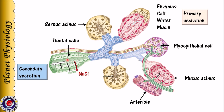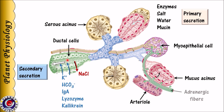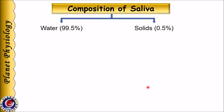As the primary secretion flows through the ducts, ductal cells — shown in green — reabsorb sodium and chloride and secrete potassium and bicarbonate, along with immunoglobulin, lysozyme, and kallikrein into the lumen. This forms secondary secretion that enters the oral cavity as saliva, which is hypotonic in nature. The diagram also shows adrenergic and cholinergic nerve supply to the salivary gland and associated arterioles.